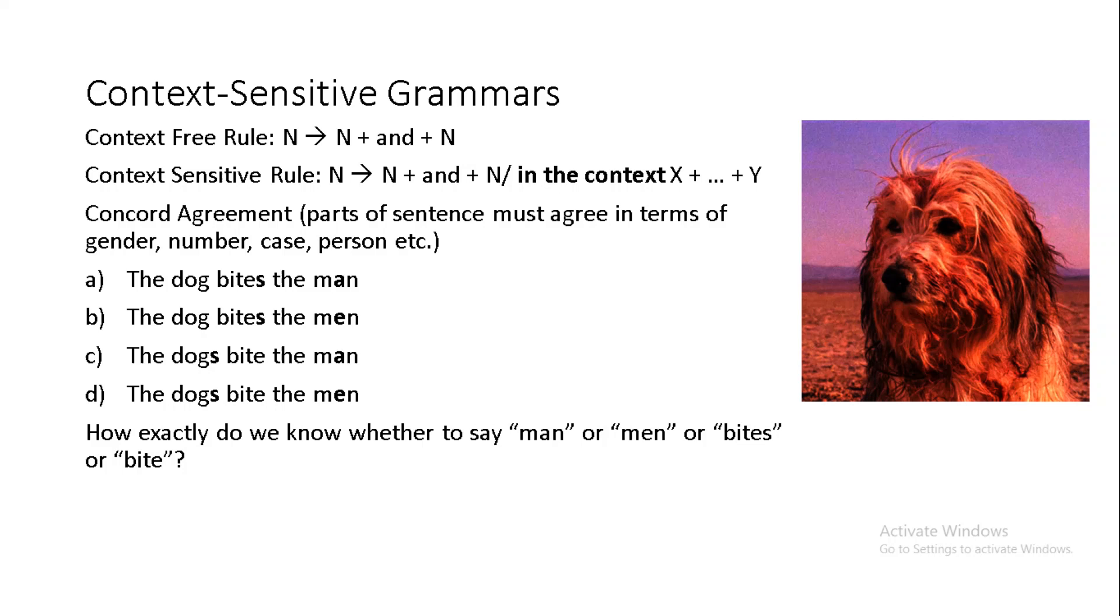In many languages, the parts of a sentence must agree with one another in terms of things like gender or number or case, person, etc. Although this is much less obvious in modern English than in so many other languages, even in this language, verbs take on different forms depending on number and person of the subject. Considering the following examples, the dog bites the man, the dog bites the men, the dogs bite the man, the dogs bite the men. How exactly do we know whether to say man or men or whether to say bite or bites?